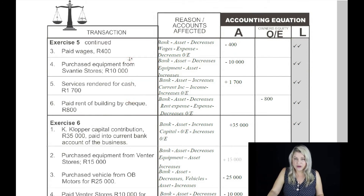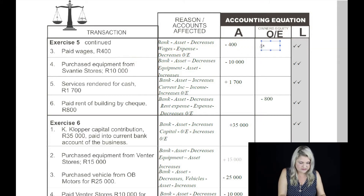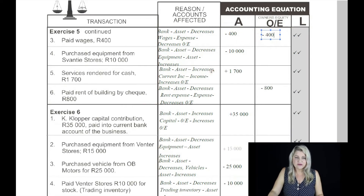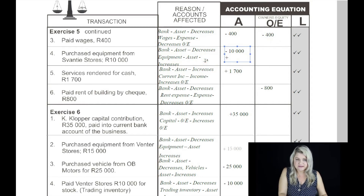Exercise five, continued. On the third: paid wages, 400 Rand. The two accounts affected are bank and wages. Bank is an asset which decreases. Wages is an expense and an expense always decreases owner's equity. On the fourth: purchased equipment from Cervantes Stores, 10,000 Rand. The two accounts are bank and equipment — both are assets. One asset is decreasing, which is bank, and the other asset increases to the value of 10,000 Rand.